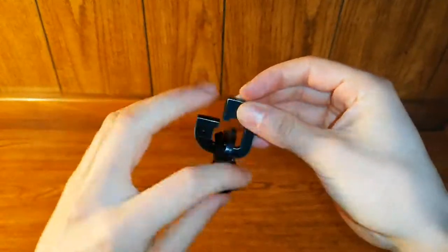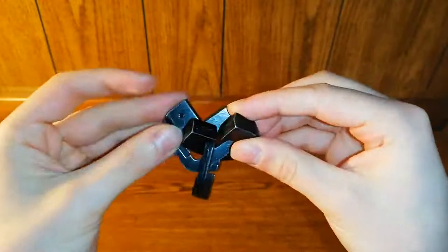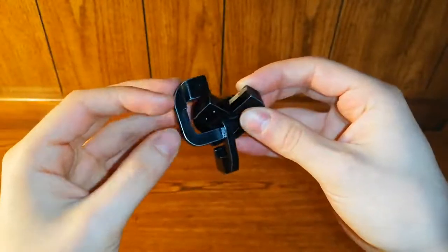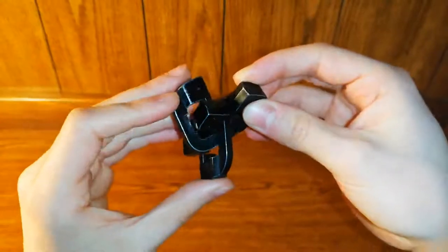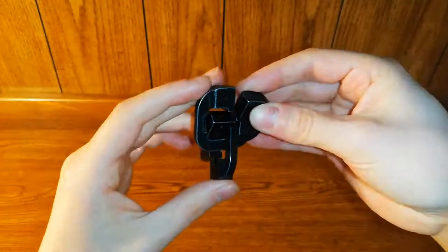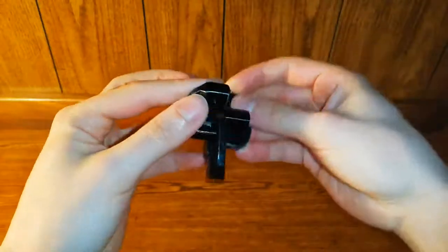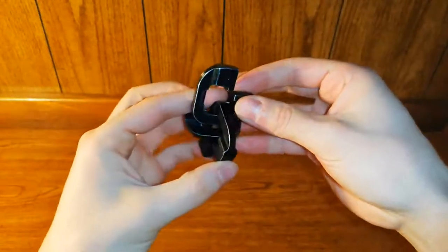If we're visualizing here, if I'm going to undo the one and two piece, we can see how one is linked to the chain right now. If I'm going to pass this one through the two piece...